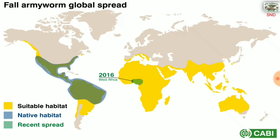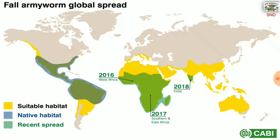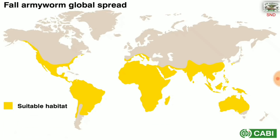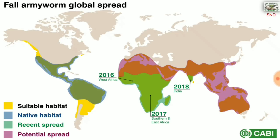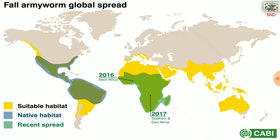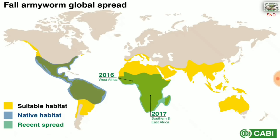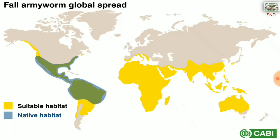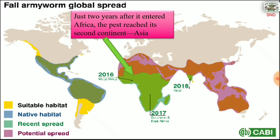The fall army worm's global spread is shown in an animation. In yellow you can see the suitable habitat for this pest, which is generally the tropical area. The blue colored area is the native habitat — the Americas. The green color shows the recent spread: in 2016 it reached West Africa, in 2017 Southern and East Africa, and in 2018 it reached the Indian subcontinent.